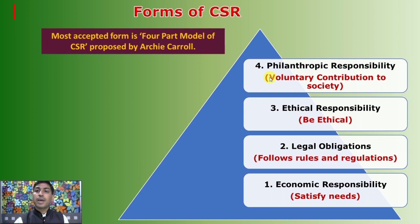The fourth form is philanthropic responsibility. It is a voluntary contribution to society and different types of community programs for charity — for example, any type of fund for education purposes. In the four forms, this is the most desirable form, but it can only be accepted or accumulated after achieving the first three. Philanthropy means when corporates move towards mankind — that is the philanthropic responsibility, and it is the most desirable.